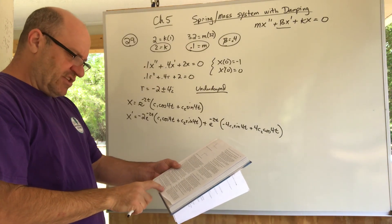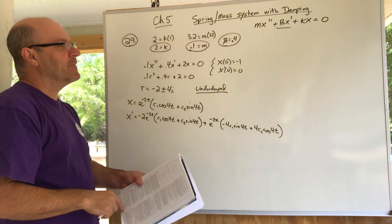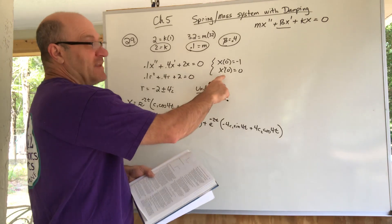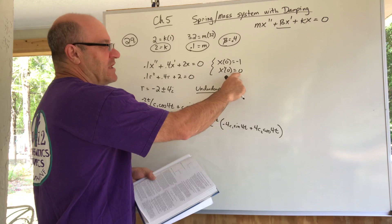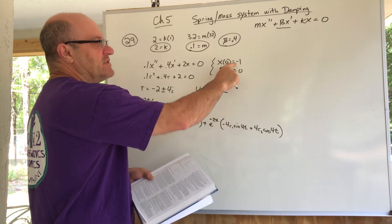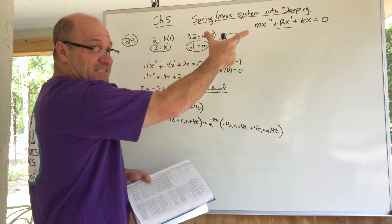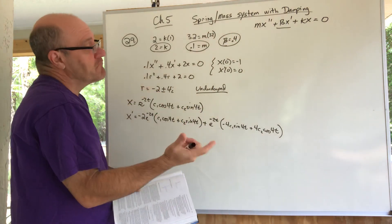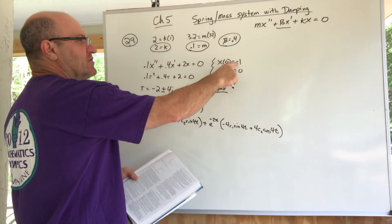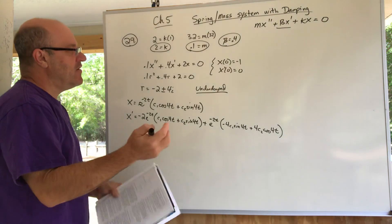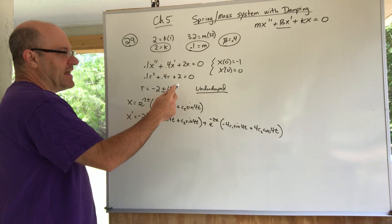The mass is initially released from rest from a point one foot above equilibrium. 'Released from rest' means no initial velocity. We pulled it up one foot above equilibrium and just let it go — no initial push. So we have an initial displacement of negative one and no initial velocity.